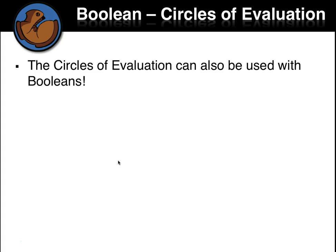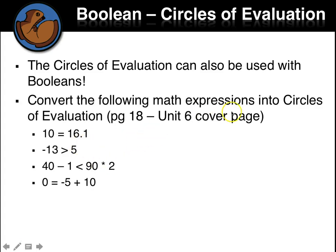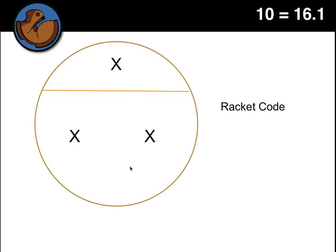So we can use circles of evaluation with Booleans. So open your workbook to page 18, which is the Unit 6 cover page. And this is just a place to write in. If you don't want to write on the printed page for the Unit 6 cover page, you can also write on the back of the page. We only print it on one side, so you can turn it over and write on the back, but that'll just be a good place to do it. And do the circles of evaluation for these one, two, three, four. I'll do the first one as an example. And so then you can copy that one and then do the rest of them. So then we'll convert it to code and test it in Dr. Rackett.